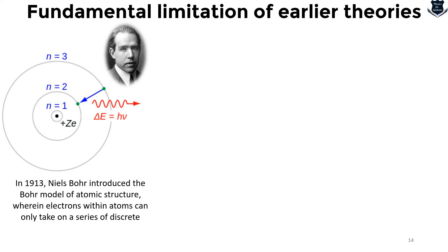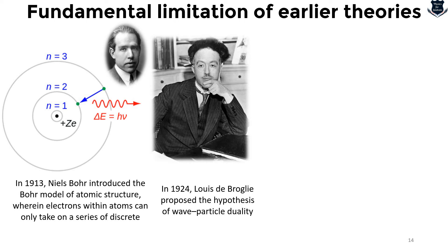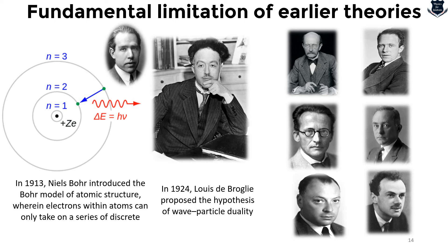In 1913, Niels Bohr introduced the Bohr model of atomic structure — electrons within atoms can only take a series of discrete rather than continuous energies, another example of quantization. In 1924, Louis de Broglie proposed the hypothesis of wave-particle duality — that microscopic particles exhibit both wave-like and particle properties under different circumstances. A coherent discipline of quantum mechanics emerged between 1925 and 1926 with contributions from Planck, de Broglie, Heisenberg, Born, Schrödinger, Dirac, and Pauli.